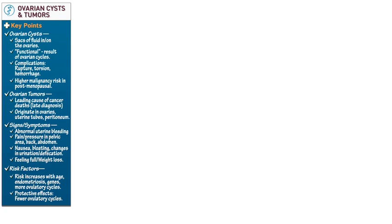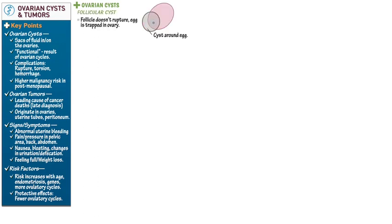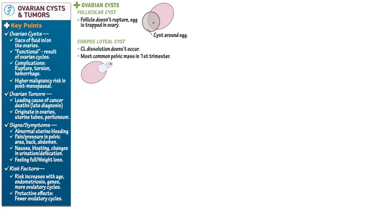Turning to specific types of ovarian cysts: when the ovarian follicle doesn't rupture and release the egg, a follicular cyst forms around the trapped egg. When the corpus luteum doesn't dissolve after ovulation, it becomes a corpus luteal cyst. These cysts are the most common masses found in the first trimester of pregnancy and usually regress postpartum.